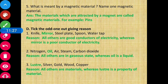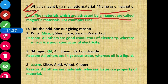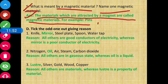Question number 5: What is meant by a magnetic material? Name one magnetic material. Answer: The materials which are attracted by a magnet are called magnetic materials. For example, pins.